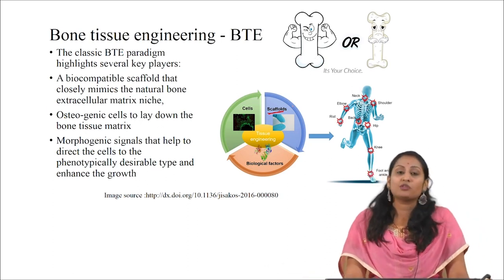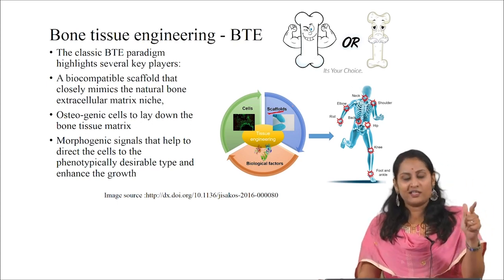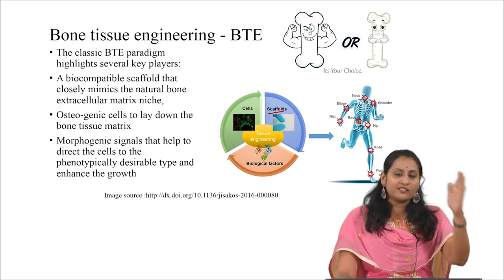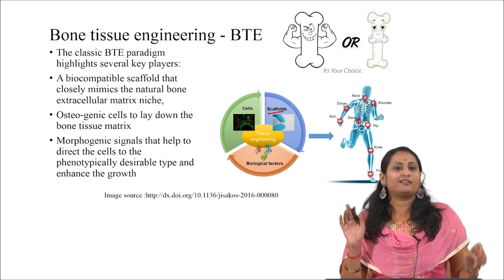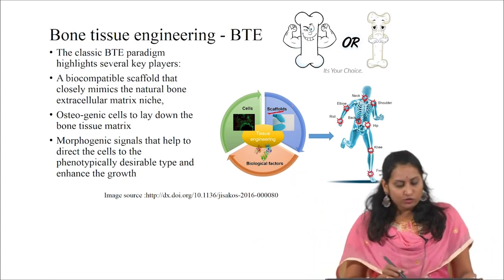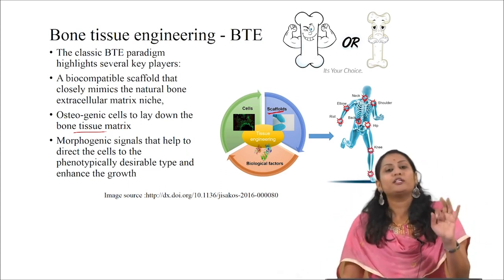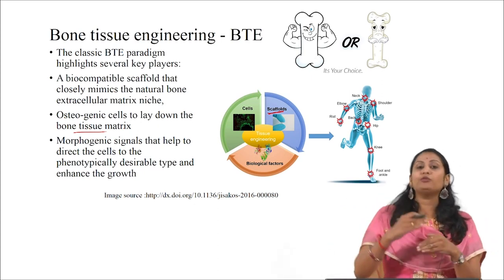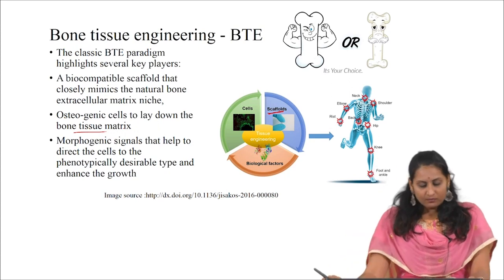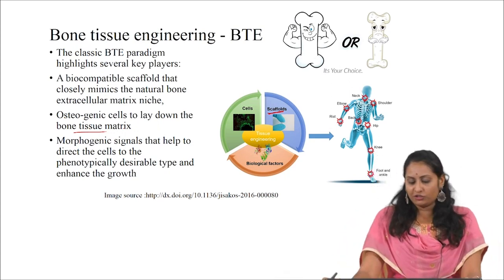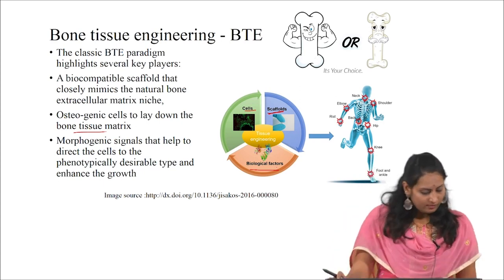There are 4 different types of cells present in bone: osteoblast cells, osteocytes, osteogenic cells, and osteoclast cells. Osteoblasts are responsible for the formation of bone, osteoclasts are responsible for bone resorption, and osteogenic cells are the only bone cells that can divide and differentiate into osteoblast cells. We need osteogenic cells to lay down the bone tissue matrix. The third essential component is growth factors, which are the morphogenic signals that can help direct the cells to the phenotypically desirable type and also for growth enhancement. Scaffolds, cells and biological factors all three together comprise the bone tissue engineering triad.